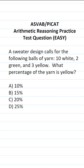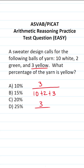We know that 3 of the balls of yarn are yellow, and there are 10 white balls of yarn, 2 green balls of yarn, and 3 yellow balls of yarn in the design. So the fraction of yellow yarn becomes 3 over 15.